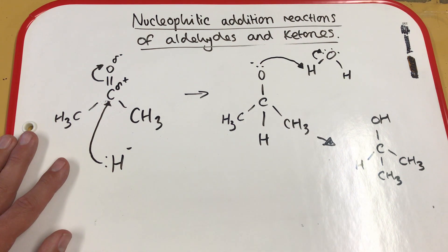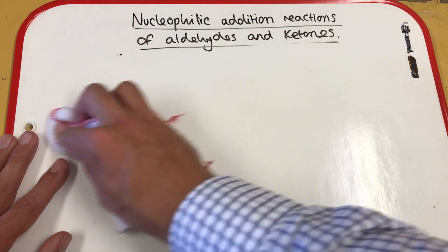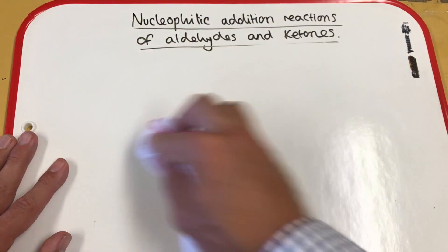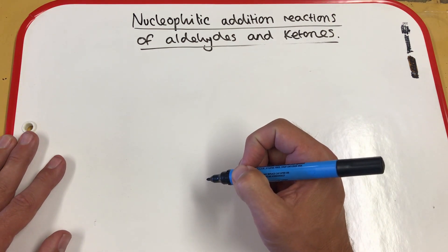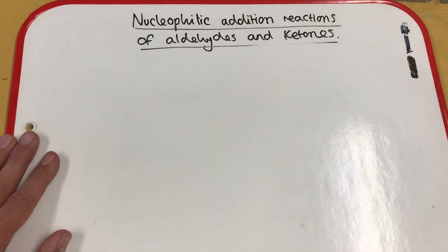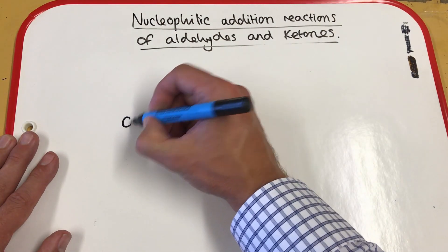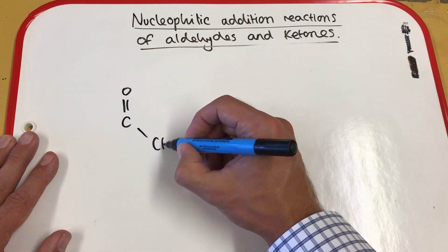There are further reactions to look at. What we also need to look at is the reaction with cyanide. So if we react an aldehyde or a ketone with hydrogen cyanide, we end up making ourselves a hydroxynitrile. So let's look at an example for this reaction and we will look at propanone again.